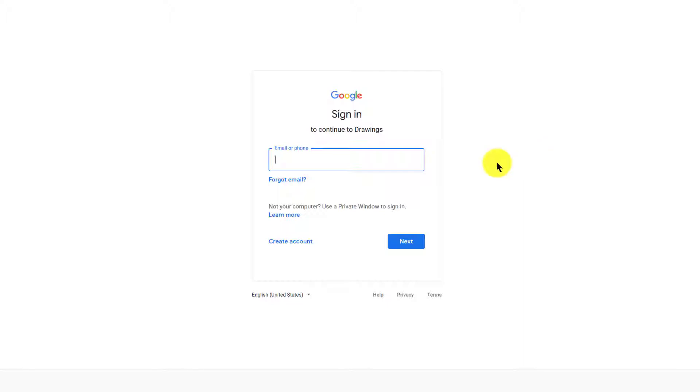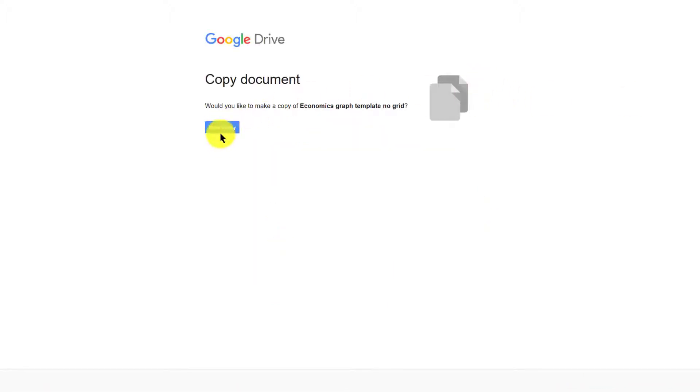So Google's going to ask you to sign into your account here, and if you don't have one you can click it to create an account. After you log in, it's going to ask you 'would you like to make a copy of economics graph template no grid?' Just say yes, make a copy, and this will make your own personal copy that you can edit and save in your account.